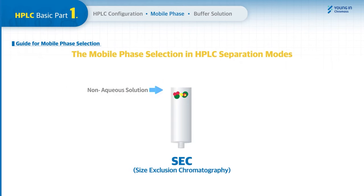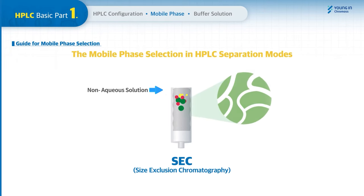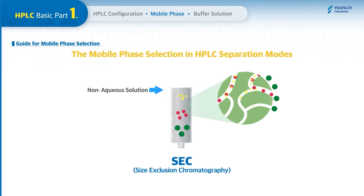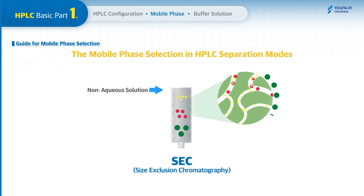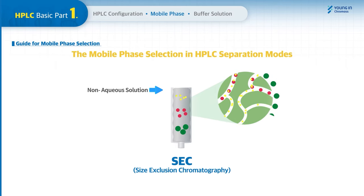In size exclusion chromatography (SEC), also called gel permeation chromatography, analytes are separated according to their molecular size. The mobile phase is an organic solvent non-aqueous solution that can dissolve the sample and maintain consistent viscosity at operating temperature.